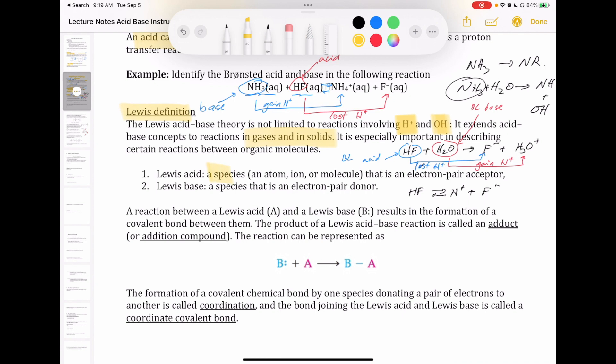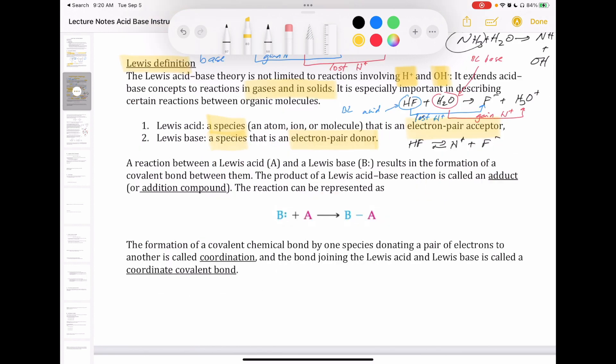So a Lewis acid is just a species that can accept electrons. A Lewis base is a species that can donate an electron pair. So very, very general definition.